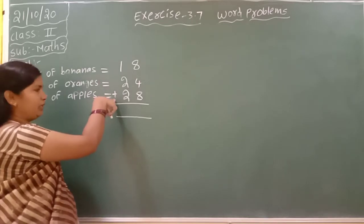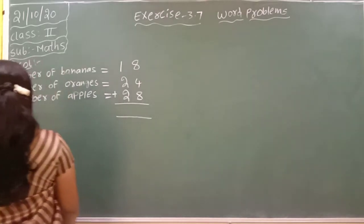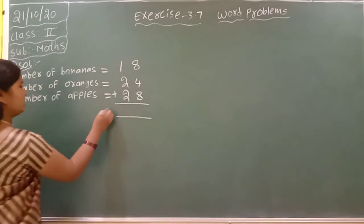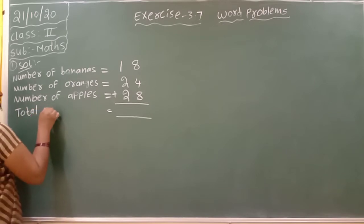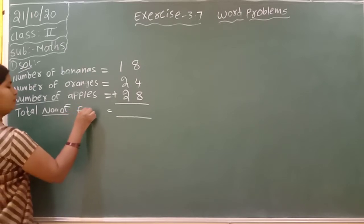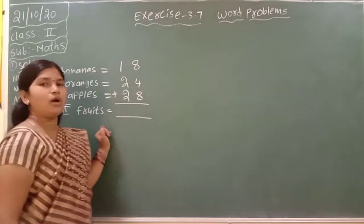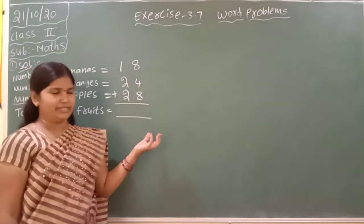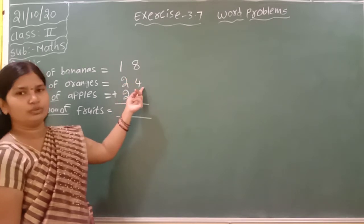Next, write the last step: total number of fruits. Now, every time you have to start addition with the ones place. Ones place: 8, 4, 8. Eight plus four — eight in the mind, take four fingers — nine, ten, eleven, twelve.